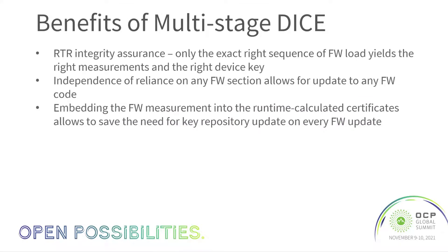The key element to allow DICE-based attestation with update enablement is to allow formal updates in the field for all sections with no exclusion, including the first mutable code. The hardware root of trust will generate the first alias certificate for that purpose. This means the ROM on the device needs to implement cryptographic operations to enable that. This capability completely removes the dependency between the first mutable code and the device identification certificate, which exists in legacy methods.